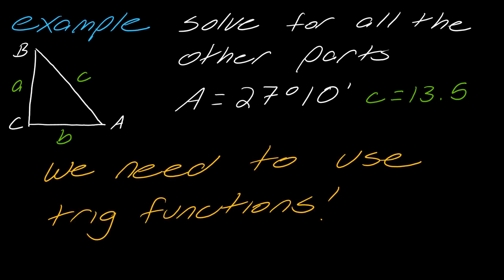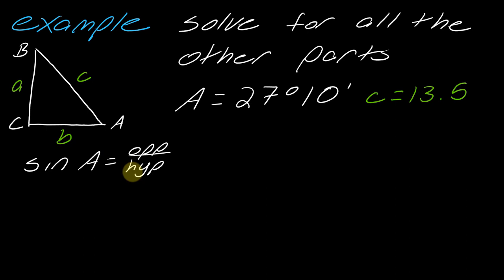Let's go through this. We're going to need to use trig functions to solve this. Let's start with sine of A. We know sine is opposite over hypotenuse. In this context, that would be side opposite over hypotenuse, A over c. I can plug this information in to get sine of 27 degrees and 10 minutes equals A over 13.5.